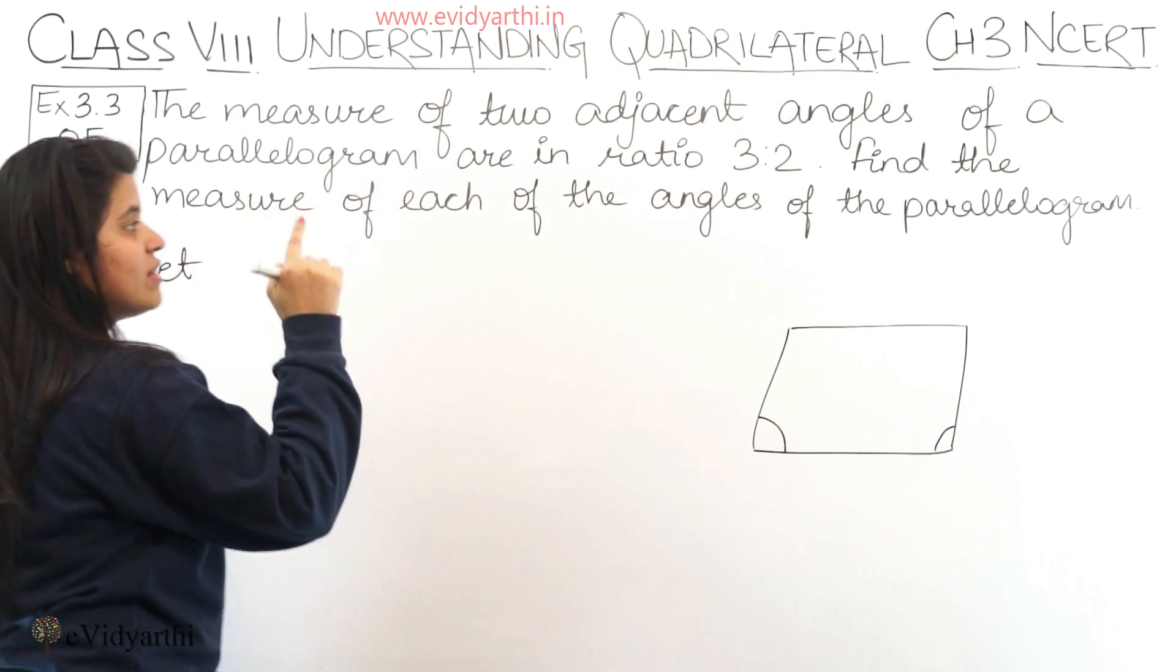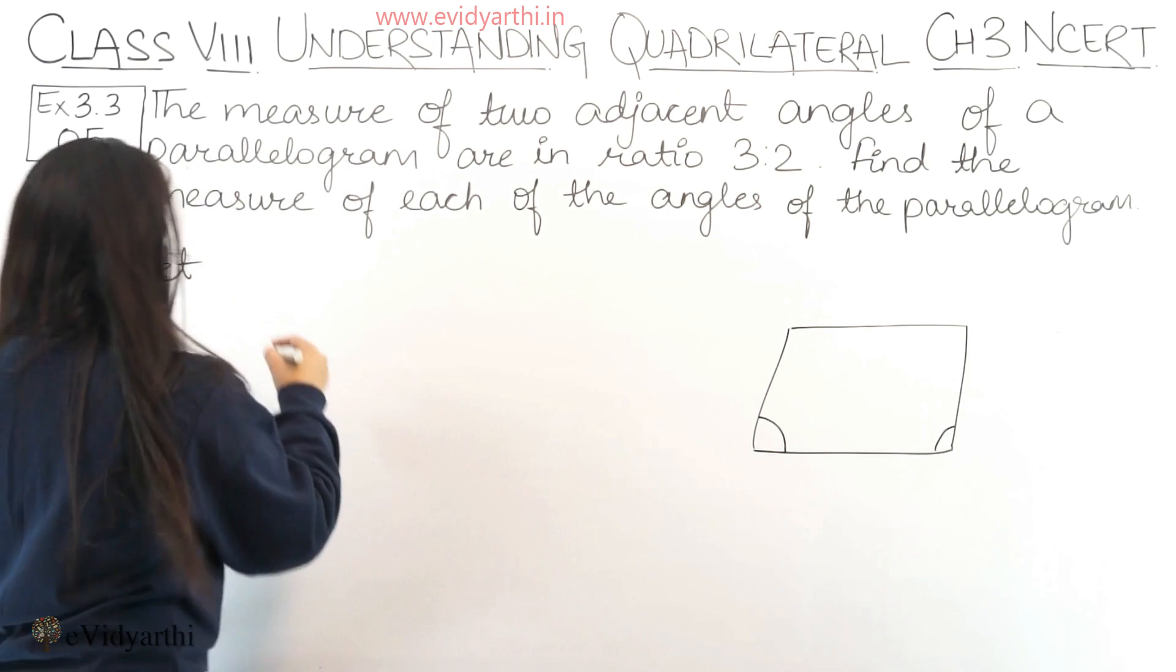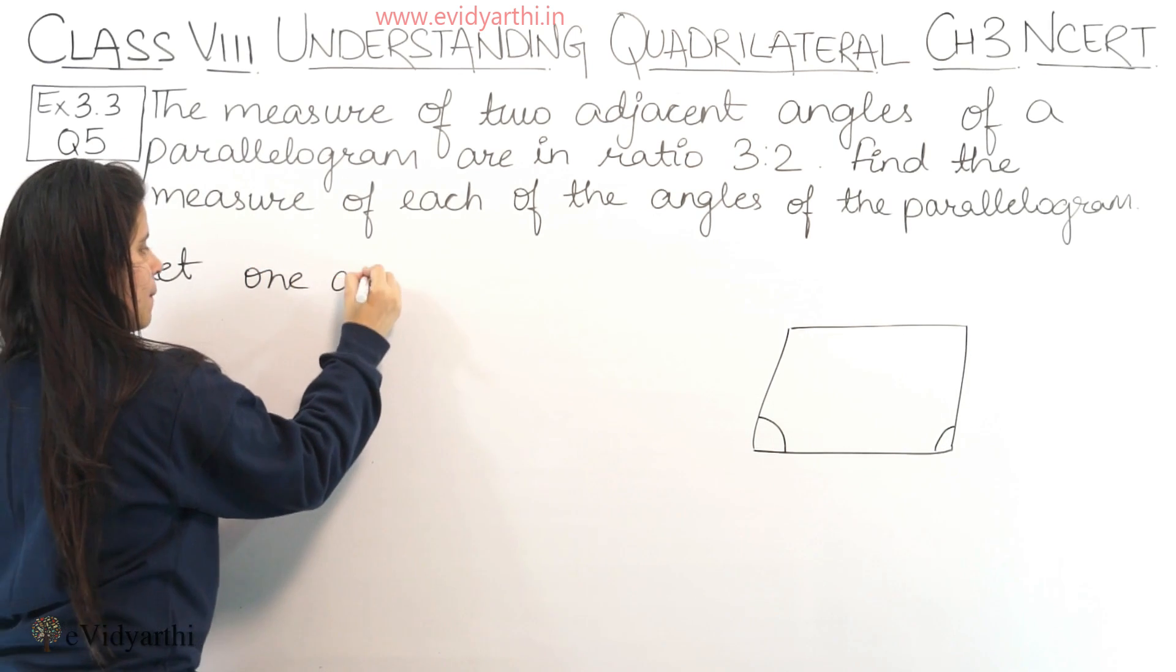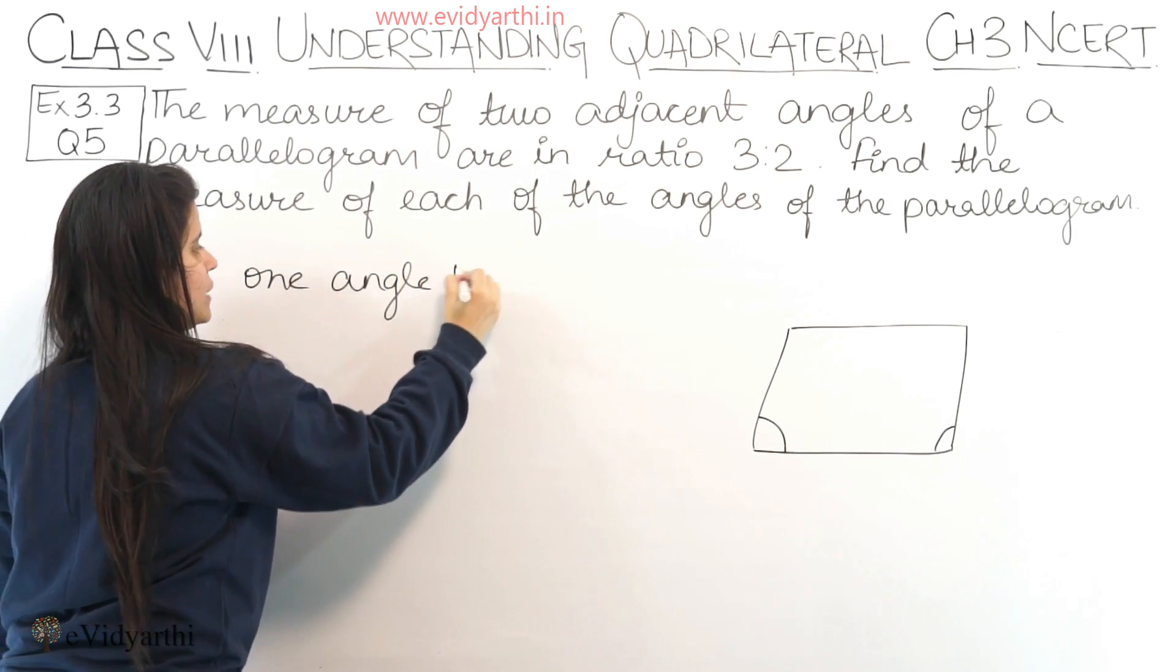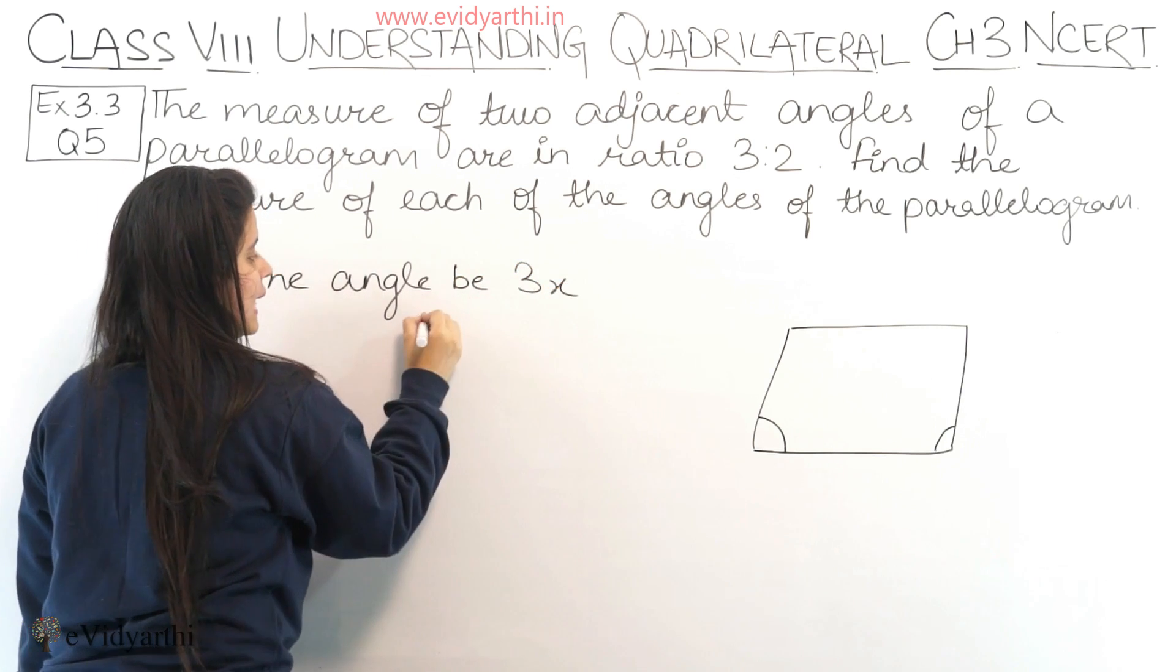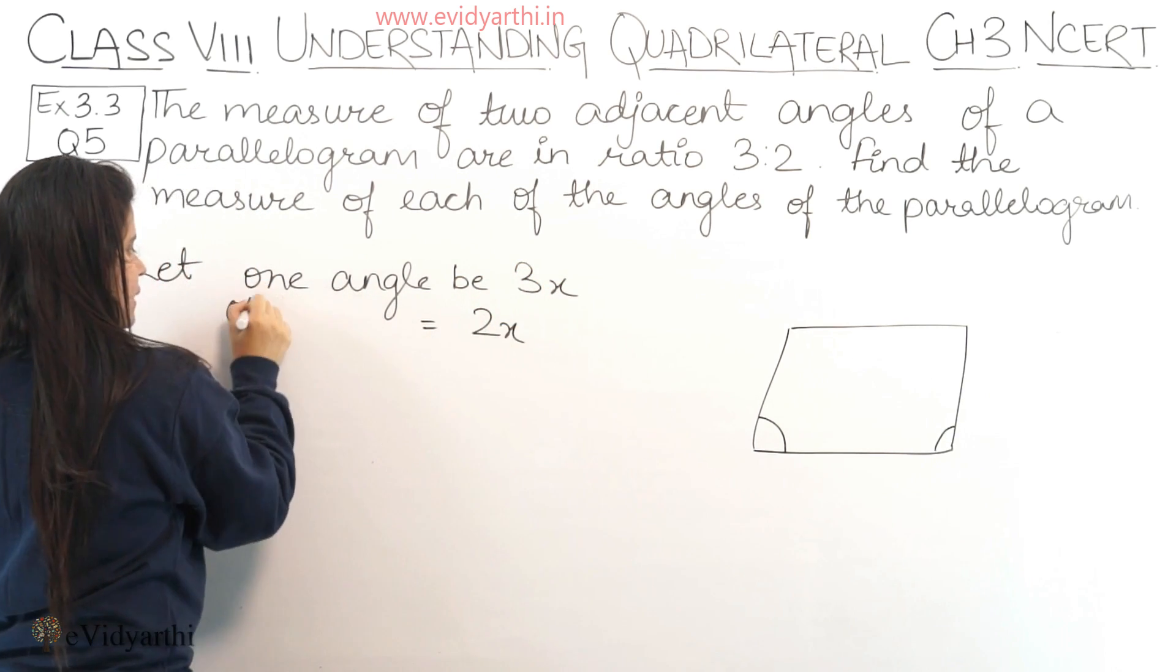We have ratio 3 to 2. So let one angle be 3x, then the other angle will be 2x.